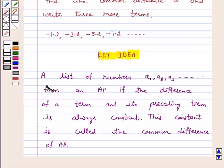We know that a list of numbers a₁, a₂, a₃, and so on forms an AP if the difference of a term and its preceding term is always constant. This constant is called the common difference of AP.